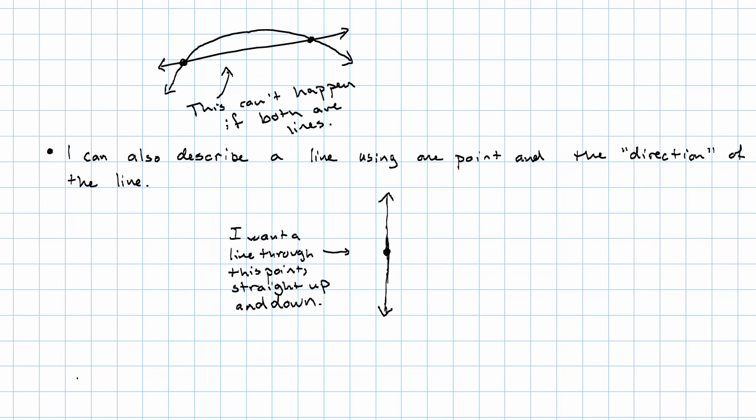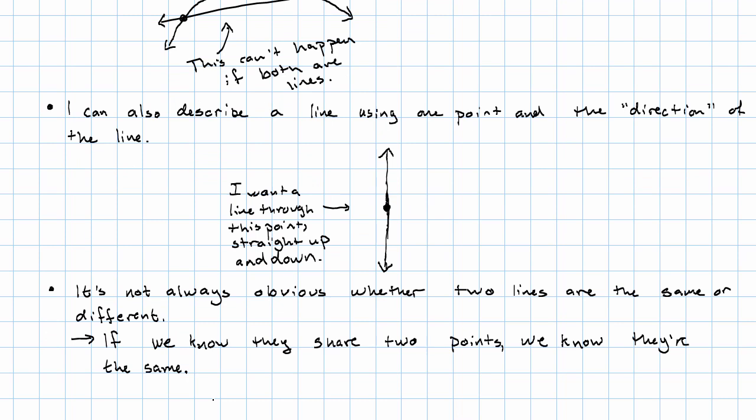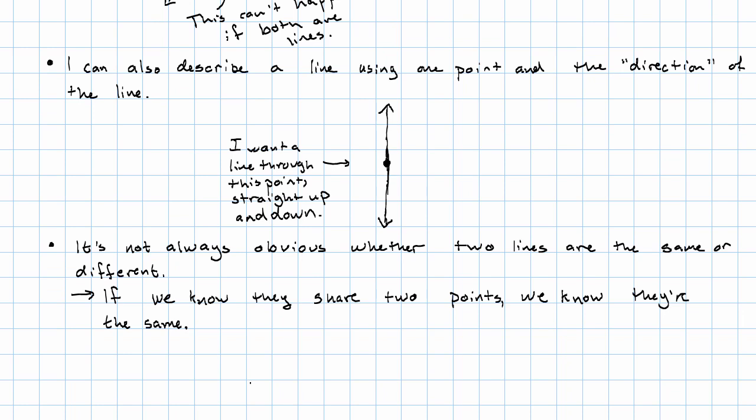Notice it's not always obvious whether two lines are the same or different. If we know that they have two points in common, then we definitely know that they're the same. But if we don't know that they share two points, do we know that they're different? Not necessarily. Maybe we just don't know about it.